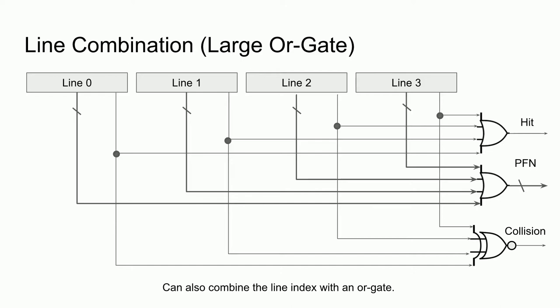A 32 or 48 input multiplexer using a 32 or 48-bit one-hot encoder will not be particularly fast, and most likely the OR gate representation will be more efficient. For smaller micro-TLBs, however, 2 or 4 input multiplexers will most likely be more efficient than the OR gate implementation.